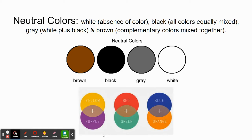We also have to talk about neutral colors. This is a little different when talking about art versus science. In art, white is the absence of color. In science, when talking about light, it's actually all colors together. When we're talking about paint, colored pencil, or crayon, we're talking about the absence of color. Black in art is all colors equally mixed together. If you mix all your colors and don't get black, it's for either two reasons: you mixed unequal portions, or the manufacturer did not create a pure color — so you end up not getting a pure black.